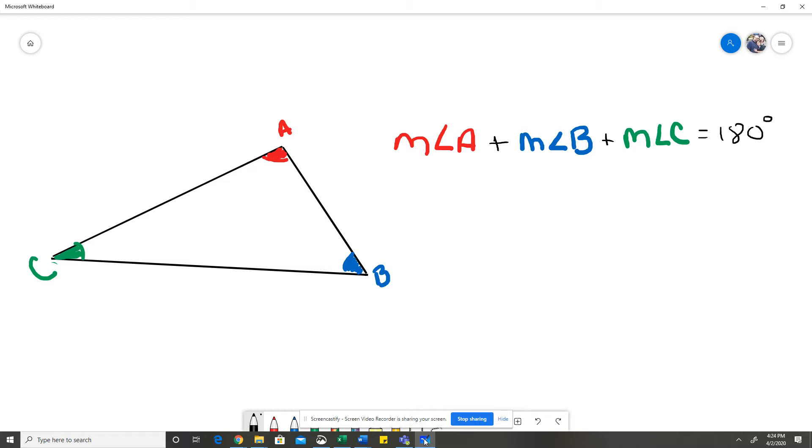So if I take the measure of angle A plus the measure of angle B plus the measure of angle C, I'm going to equal 180 degrees.